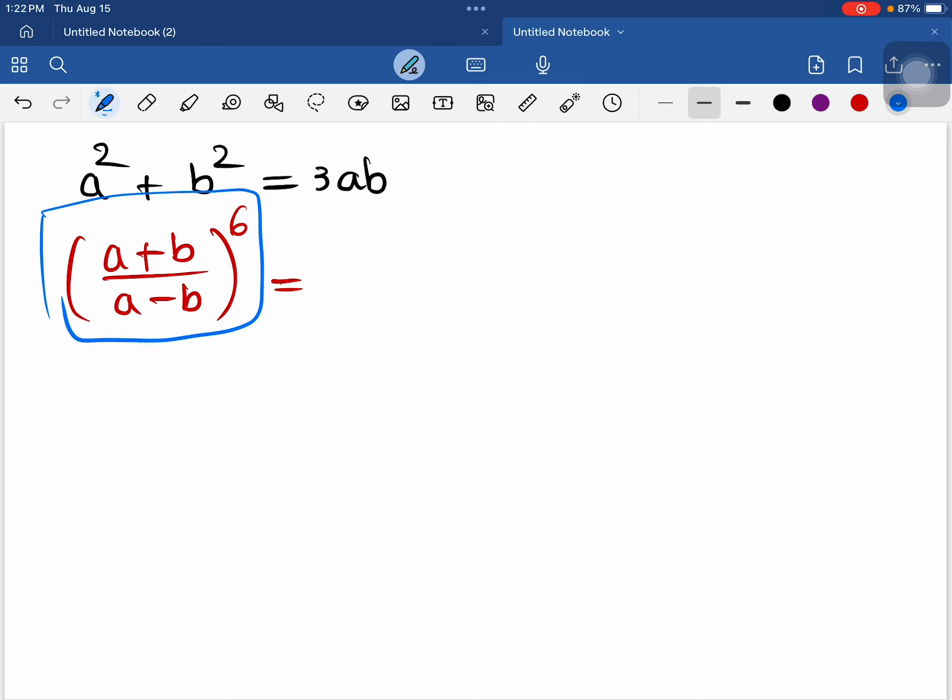In this exponent form, we can rewrite as a plus b over a minus b to the whole power 2, raised to 3.